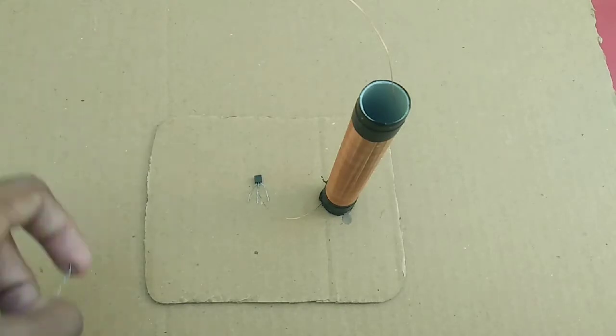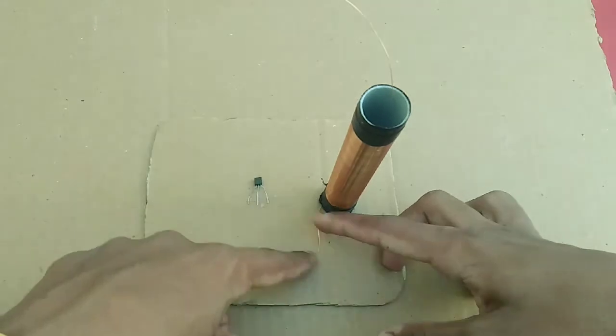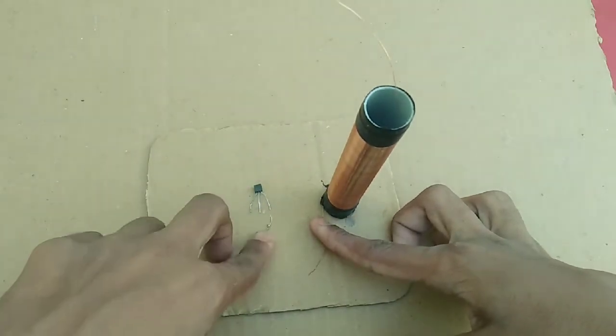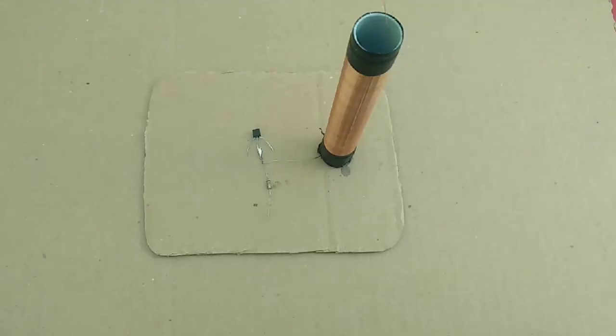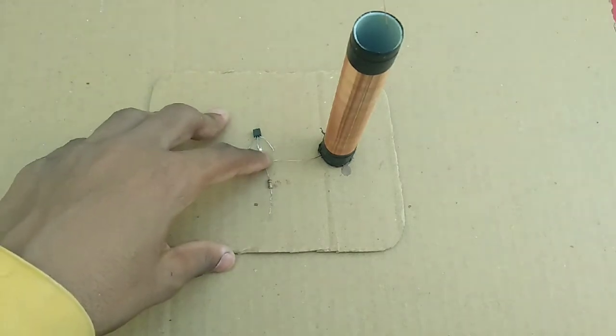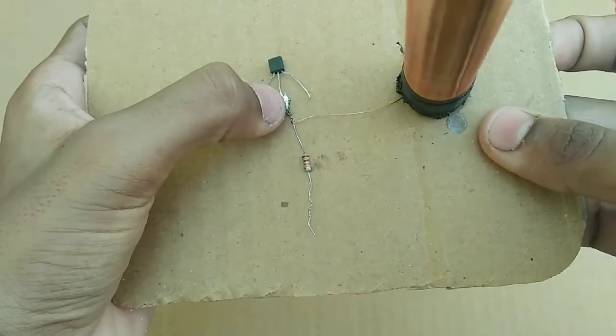Be careful. Next, solder the transistor middle point - the base - to the copper wire. Friends, I'll show you the circuit diagram for more clarity on this.